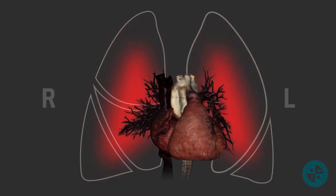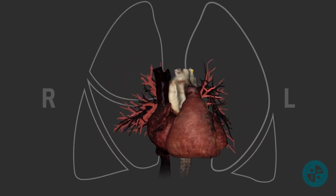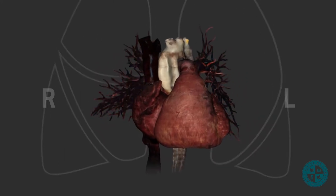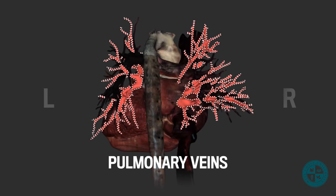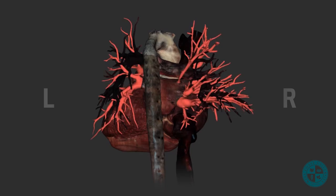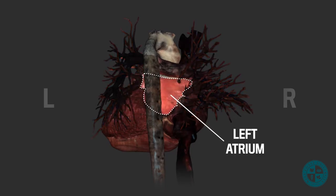The now oxygen-rich blood goes into the venous side of the pulmonary circuit and begins to make its way back to the heart. On the posterior side of the heart, we will see the four pulmonary veins — two from the right lung and two from the left lung — all draining into the left atrium.